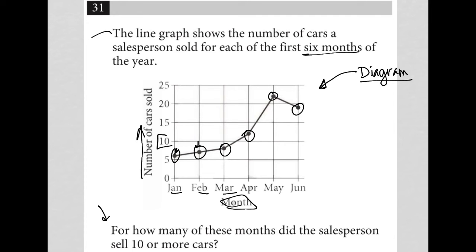Well, here is 10 for the number of cars sold. So, I'm going to just draw a horizontal line straight across the graph. Basically, everything above that line represents a month where the number of cars sold was greater than 10.